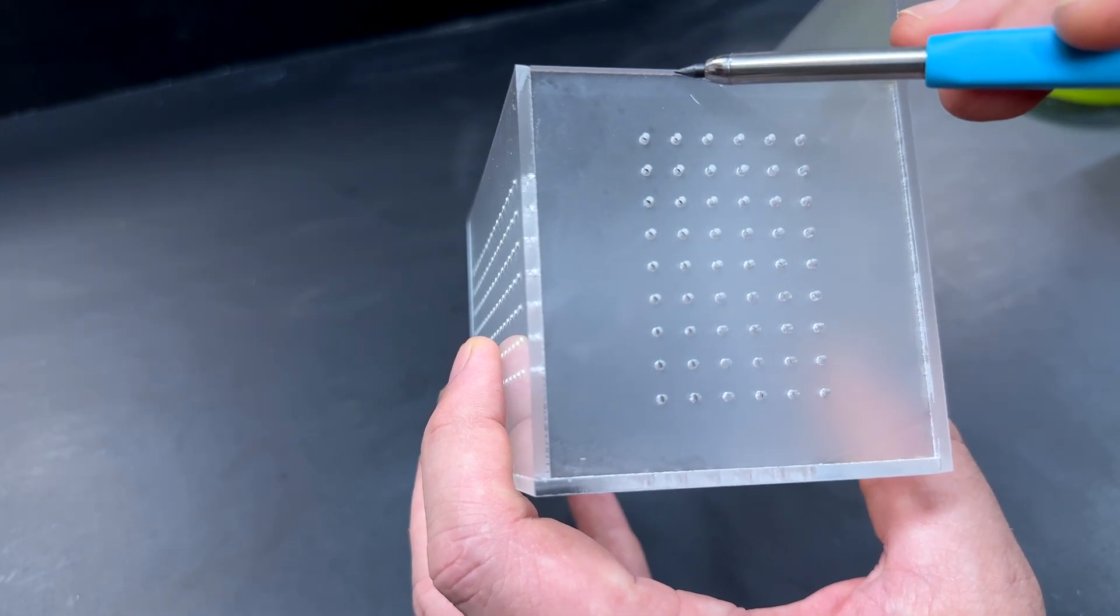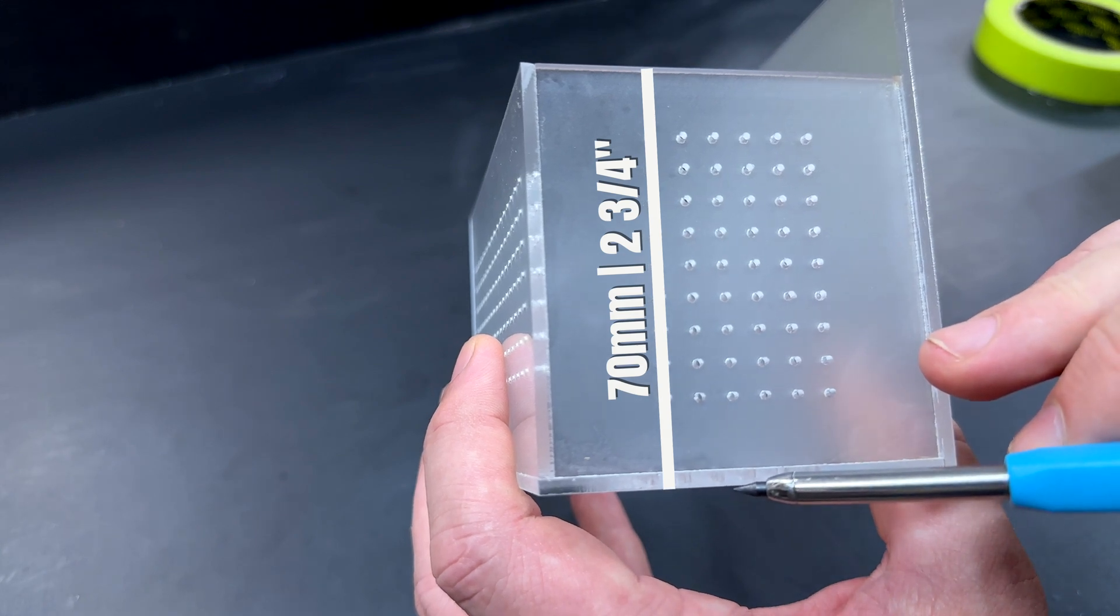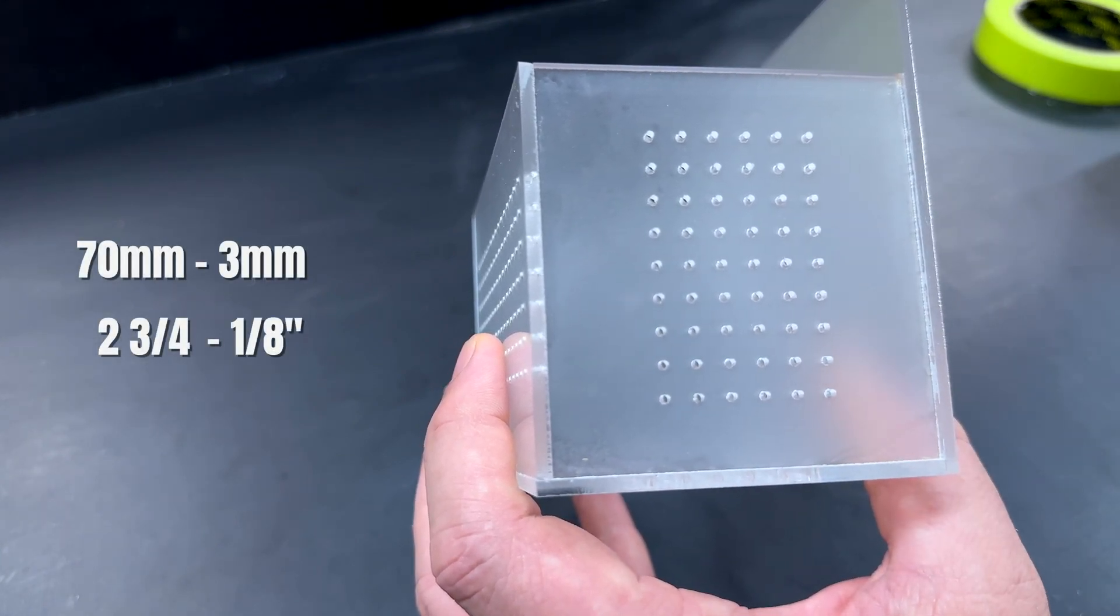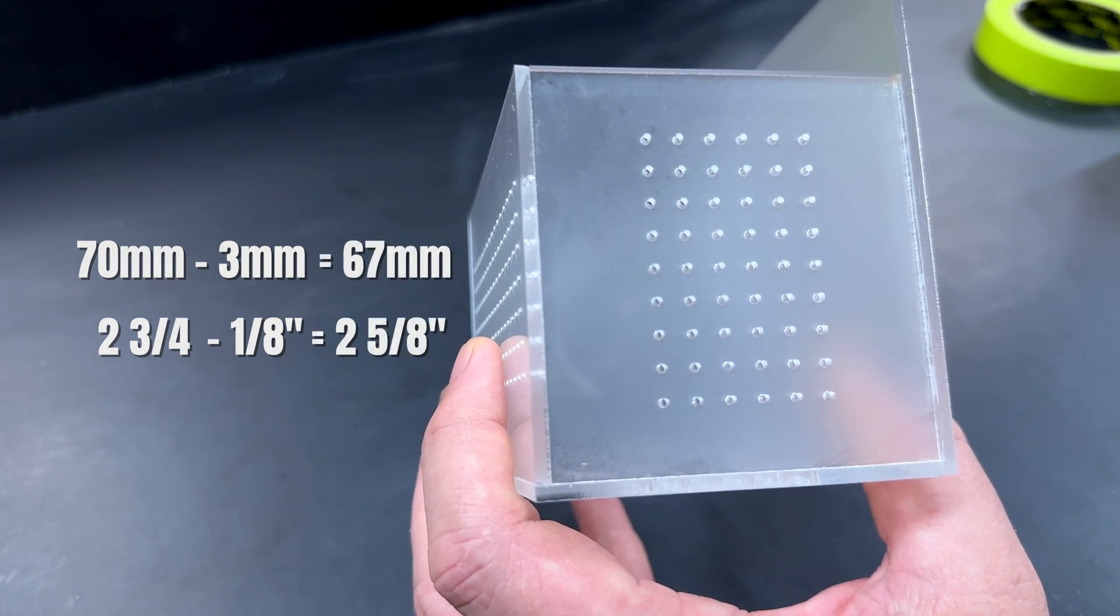Likewise if this is 70 millimeters from this point to there I need to subtract the thickness of the bottom panel which is 3 millimeters so that will become 67 millimeters.